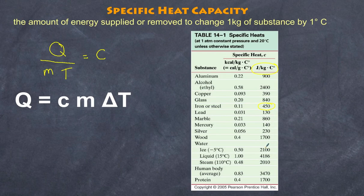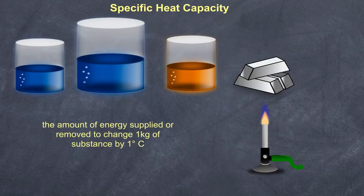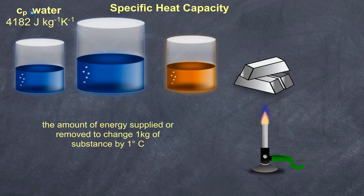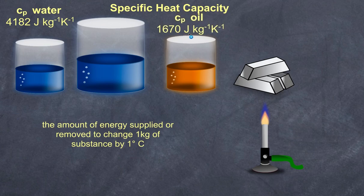So if we go back to our illustration here, specific heat capacity for water is 4182, the specific heat capacity for oil is 1670, and the specific heat capacity is 450.